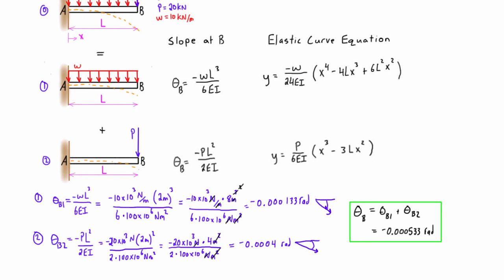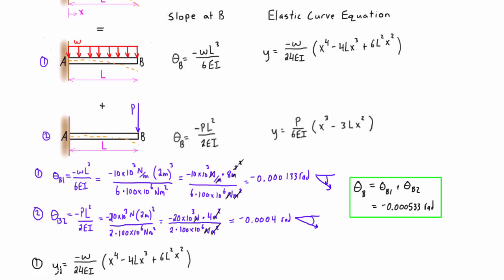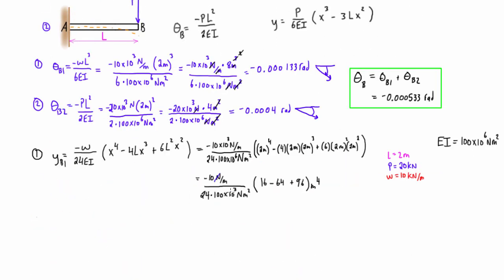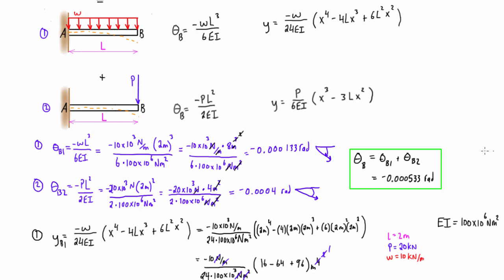That is our first answer — the actual slope at point B equals negative 0.000533 radians. Now let's do the deflection at B. We plug into the elastic curve equation for system one and check units: newtons cancel newtons, meters squared reduces by one, leaving units of meters. The calculation gives negative 0.0002 meters, which equals 0.2 millimeters. The negative sign means this is 0.2 millimeters in the downward direction, which makes sense for the distributed load.